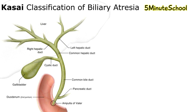There are a few different types in the Kasai classification. We have type 1, type 2 — which is divided into two subtypes, type 2A and type 2B — and then the final type 3.